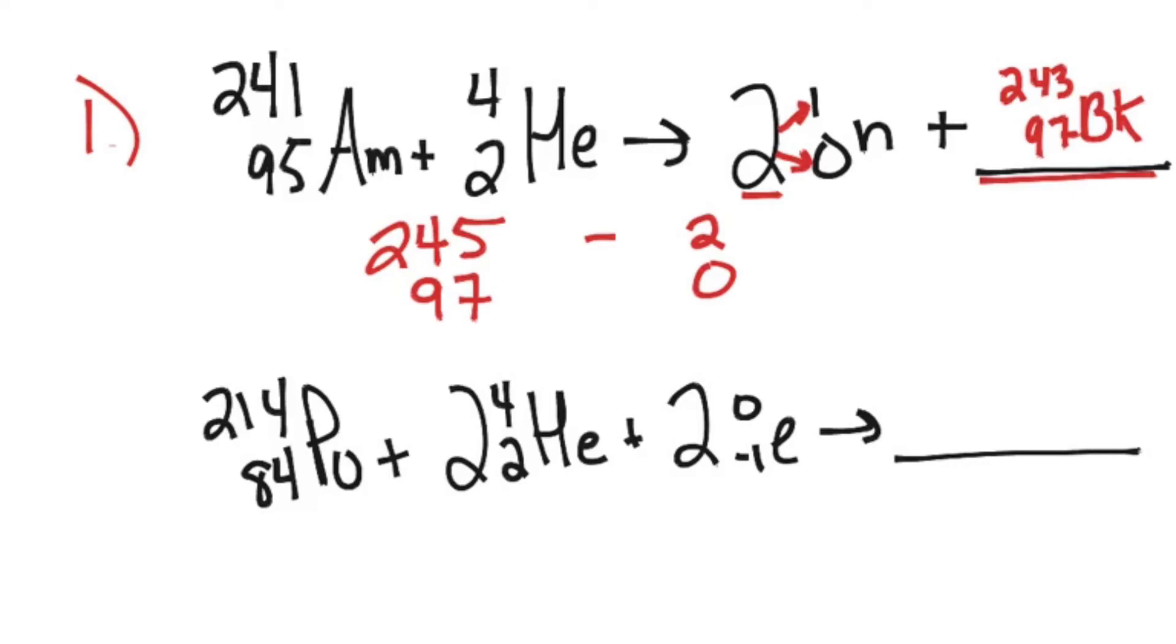So let's try the next one, example number 2. Same thing where I need to make sure that the top numbers and the bottom numbers on each side are equivalent, and let's start adding up what we've got on the left-hand side. So I have 214, and then I see that I have 2 alpha particles.